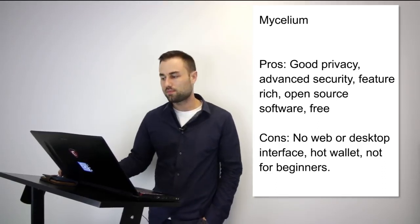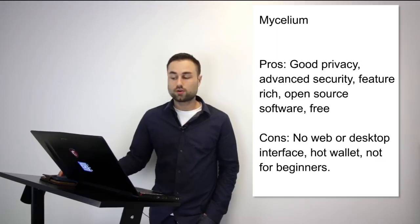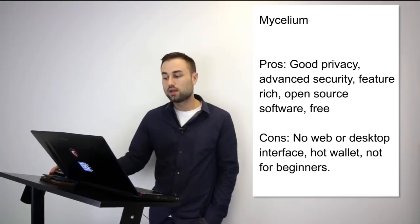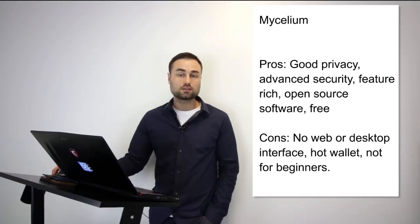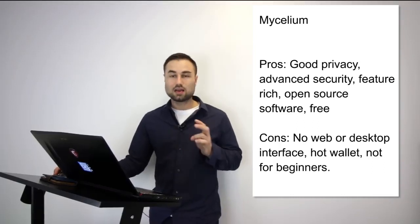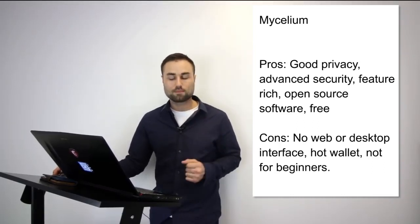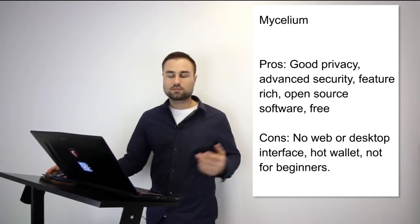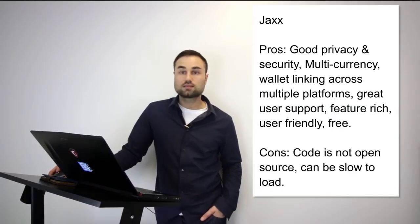Number two is Mycelium — a more advanced option. Currently it's only for Bitcoin, but they do have plans for multi-currency support with Ethereum next. It's available for both Android and iPhone. The pros are great privacy, advanced security including multi-signature security requiring multiple touch points, open source, and free. The cons: no web or desktop interface, it is a hot wallet, and it's not really the best for beginners. I've used it — it's not my go-to wallet but I think the user interface is really good.